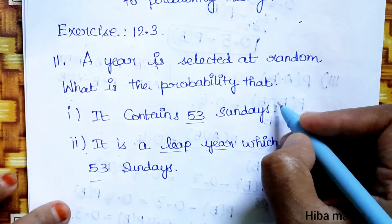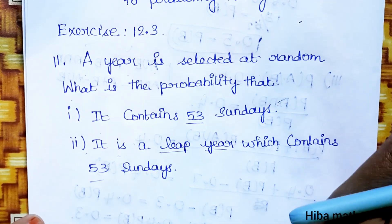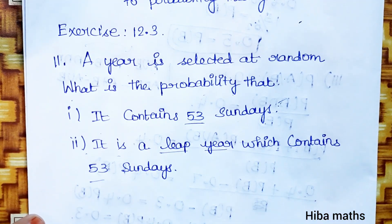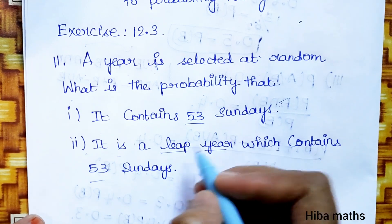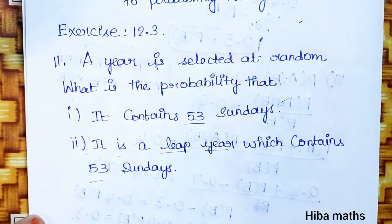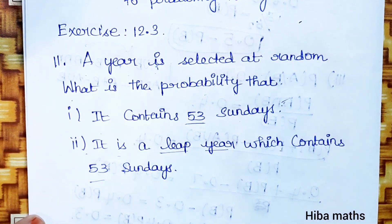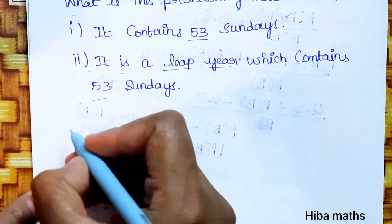So, the first condition is: not a leap year, it contains 53 Sundays. The next part mentions a leap year with 53 Sundays. Let's take two subdivisions.